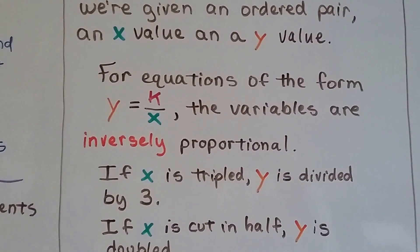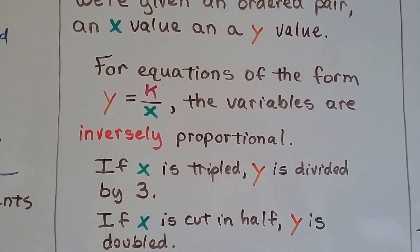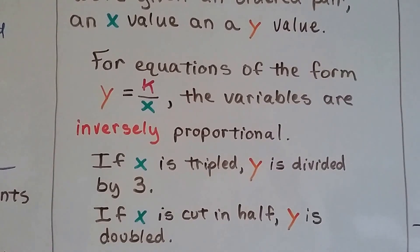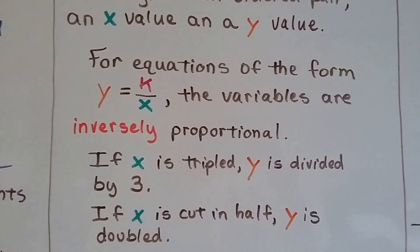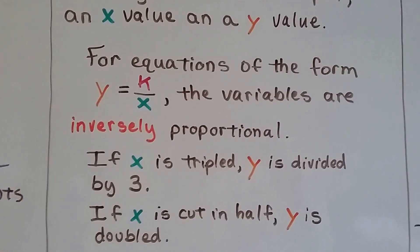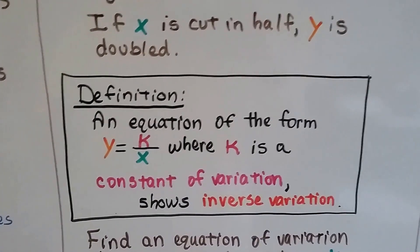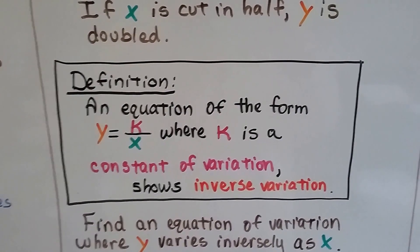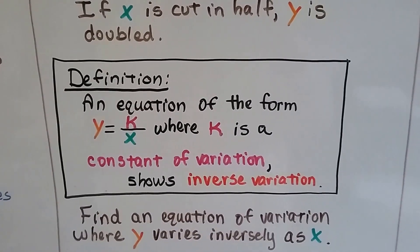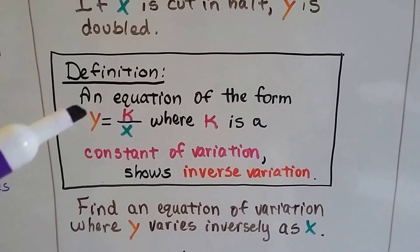If x is tripled, then y is divided by 3. If x is cut in half, then y is doubled. It goes up, see? The opposite is happening. So our definition is an equation of the form y equals k divided by x, where k is that constant of variation, shows inverse variation.